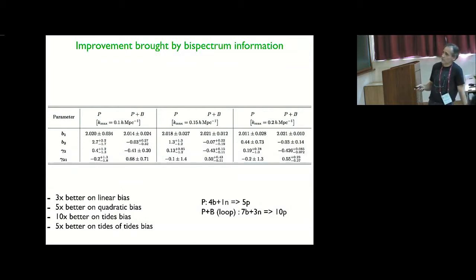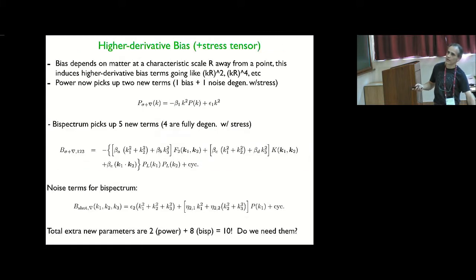The key question is how much do we gain by including these loop corrections and adding the bispectrum on top of the power spectrum? So let's consider for simplicity, say, Kmax of 0.2, which is what people usually or have done in the past. So you can see the constraint on the linear bias decreases roughly by a factor of three once you add bispectrum information. Now, this is for a fixed cosmology. I'll mention later what happens if you start varying cosmology, in particular sigma eight, which is the interesting thing.